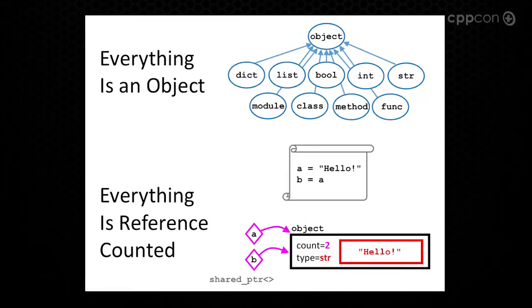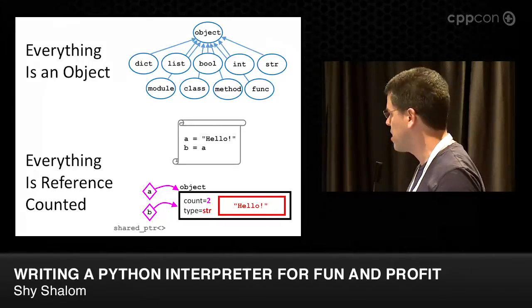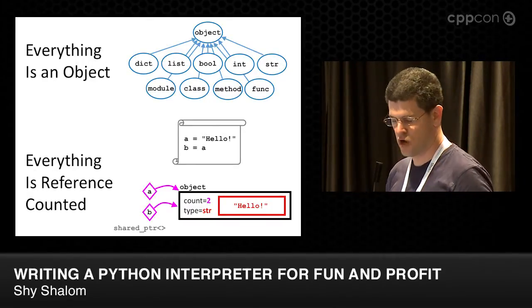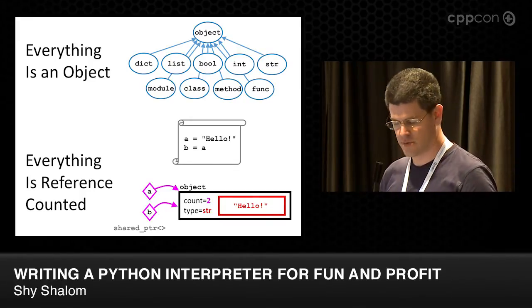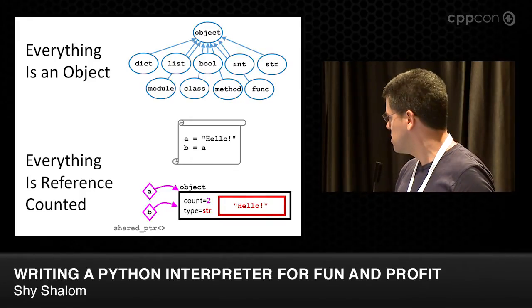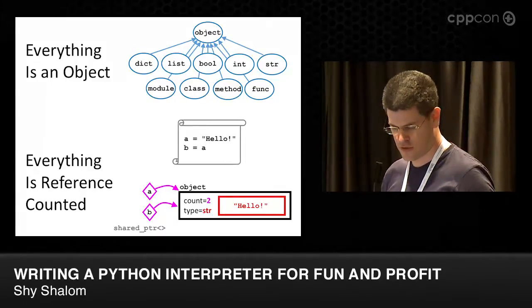Another key concept is that Python has an object model. Everything is an object. We have a string, int, and even functions, classes, modules. Everything is an object, everything is also reference-counted. If you have a variable, it's actually a reference to an object. Every object holds the number of references it has, similar to shared PTR. That's basically everything you need to know about Python.